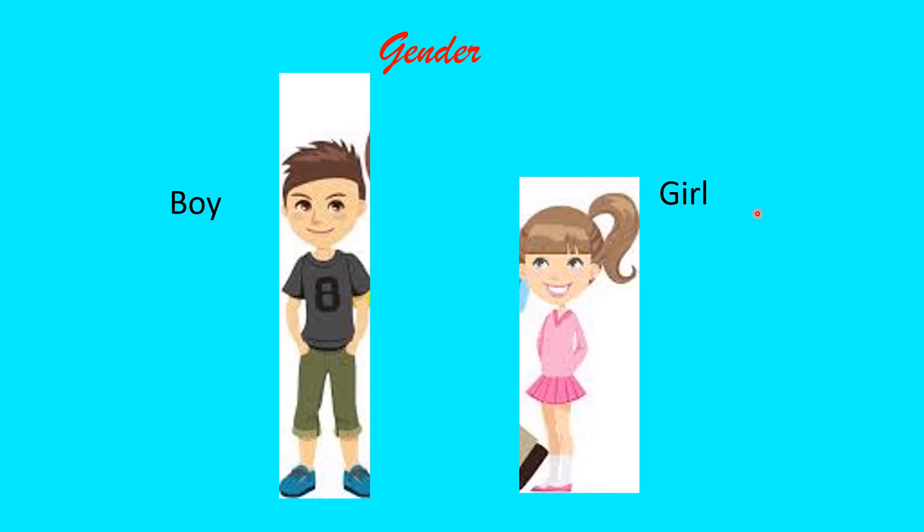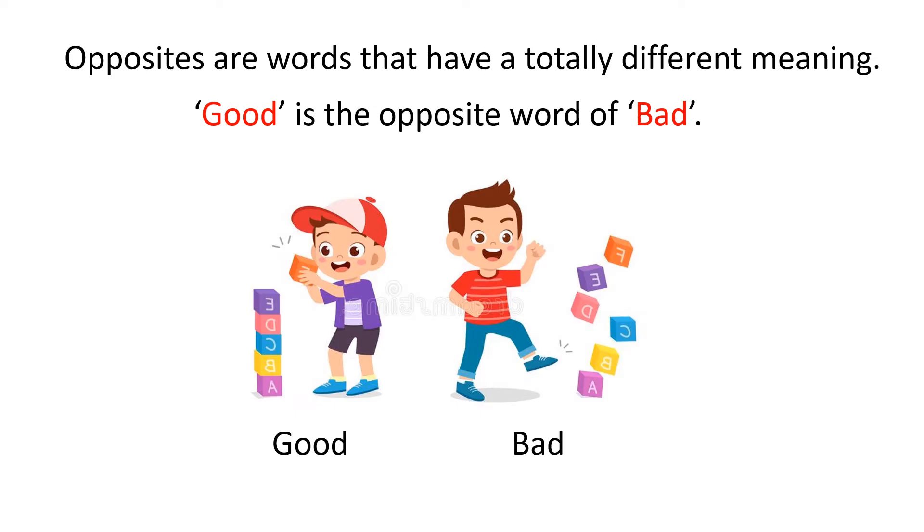Today children, we are going to learn about words that have totally different meaning. They are different in every way. Opposites are words that have a totally different meaning. Good is the opposite word of bad. This little boy is good and this little boy is bad. So the opposite of good is bad.